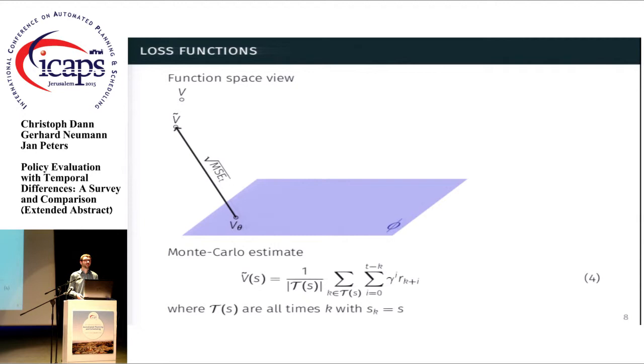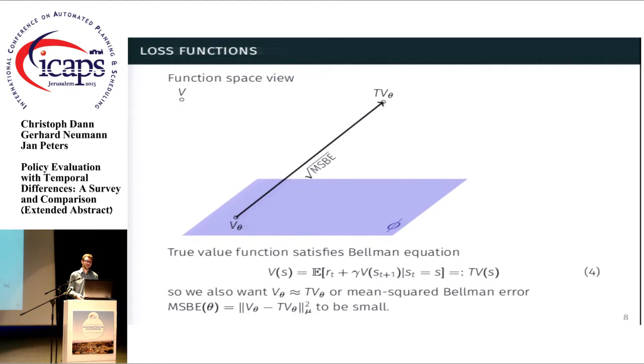However, there's a problem with this loss function. The problem is that it has very high variance in typical settings. So one can mitigate this issue by leveraging the fact that the true value function satisfies the Bellman equation, which says that the value of the current state is the expected immediate reward plus the discounted value of the expected next state.